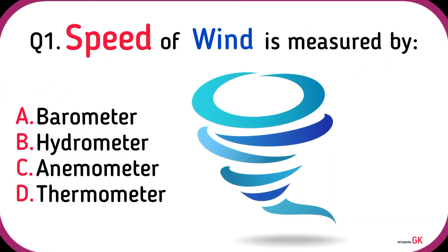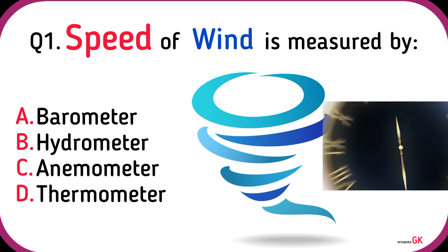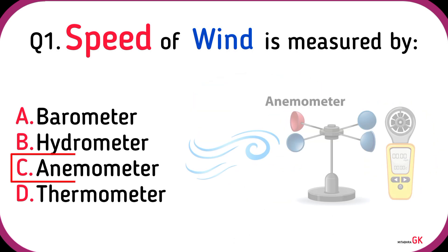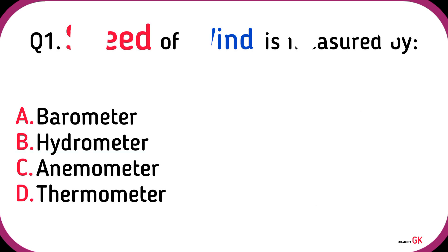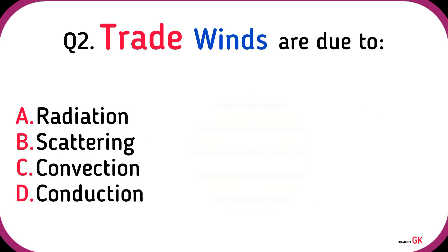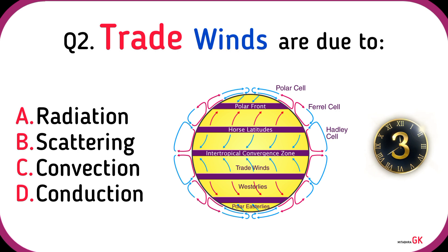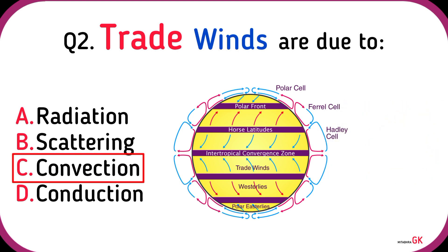Speed of wind is measured by Anemometer. Trade winds are due to Convection.